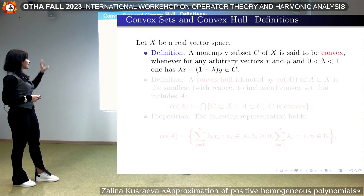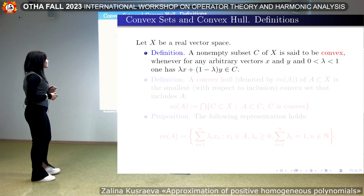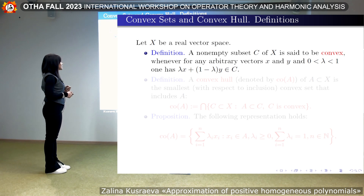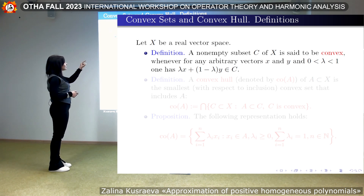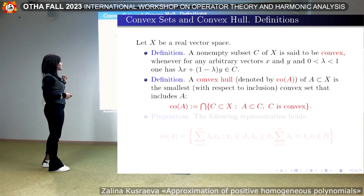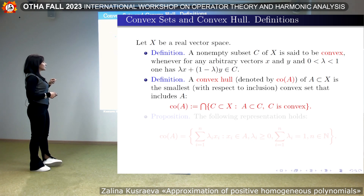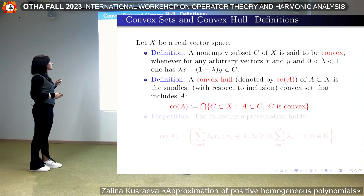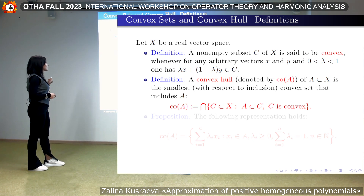I'll try to be very fast in this part. First of all, we call a subset of a vector space C convex if, together with two points x and y, it contains the line segment — or let me call it interval — which is also included in this set. We define the convex hull of an arbitrary set.